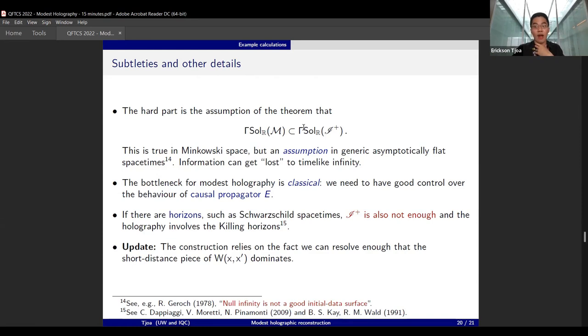The idea is that you really can lose some information to timelike infinity. So you can see that the bottleneck of this construction is, ironically, not quantum mechanical—it's really classical. You really need to know where the causal propagator sends things out, and if you have horizons, certainly scri plus is not good enough as a causal surface. You need to include the horizons and, of course, the same contentious issue of whether you need to include timelike infinities.